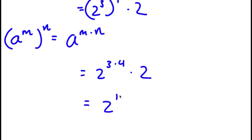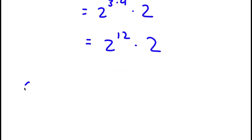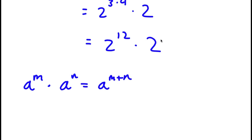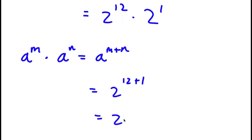So I have 2 to the power of 12 times 2. If I have something in the form a to the power of m times a to the power of n, this is equal to a to the power of m plus n. So in this case, 2 is the same thing as 2 to the power of 1. So I have 2 to the power of 12 times 2 to the power of 1, which is equal to 2 to the power of 12 plus 1, which is equal to 2 to the power of 13. So this is my answer.